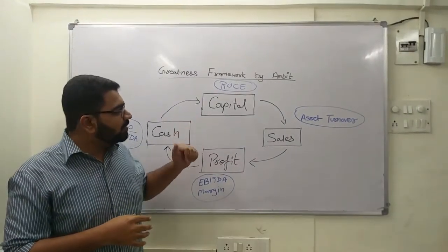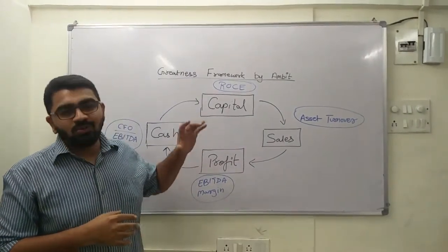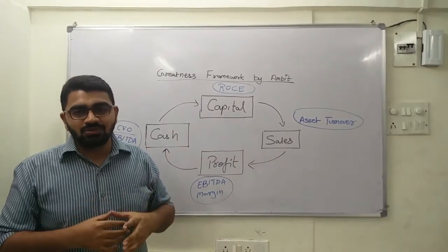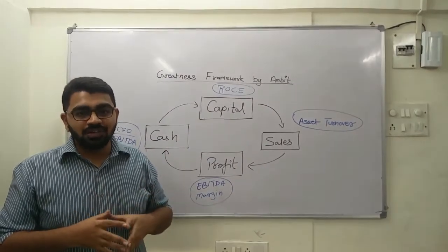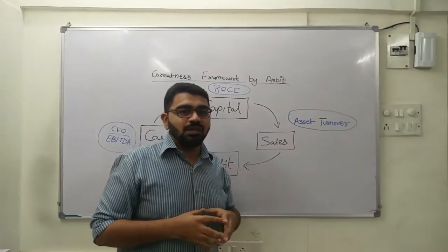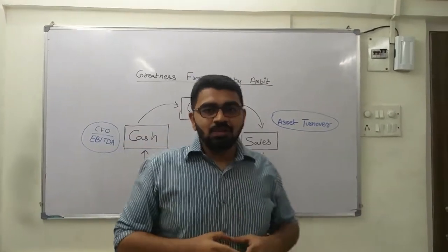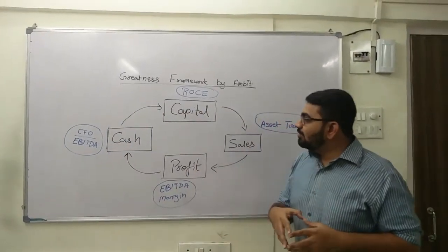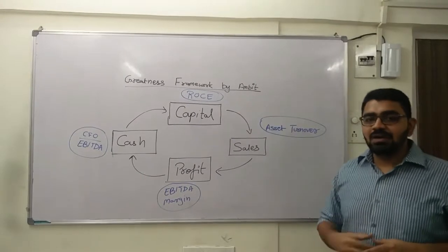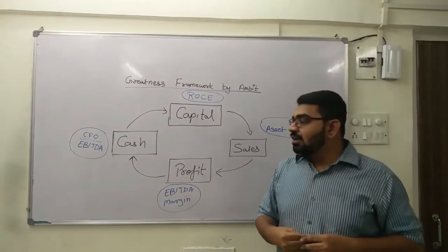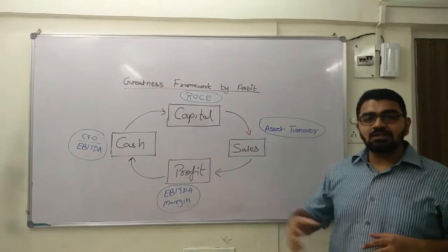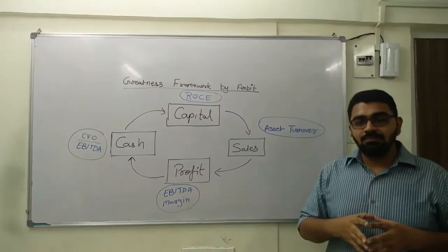So today we will learn how to use financial ratios or accounting ratios to identify companies worth investing in. To do that, we will look at the Greatness Framework by Ambit Capital, and we will learn this framework with an example.